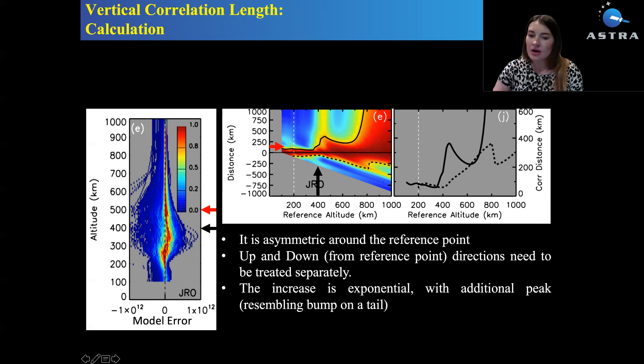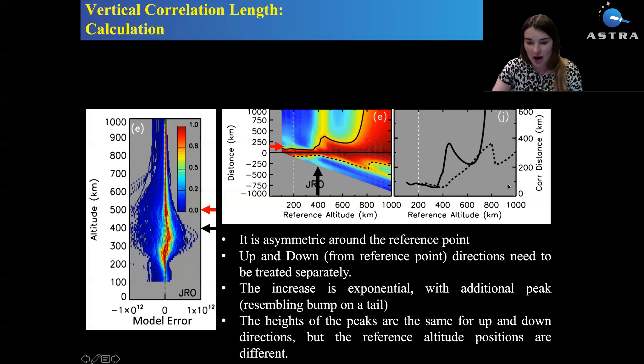The correlation distance increases exponentially with reference altitude, plus it has this well-pronounced bump or tail. That is two bumps. The height of these bumps, meaning that they refer to the same correlation distance, but the position is different. The position of the reference altitude is different if we look at the direction above reference point and below reference point.